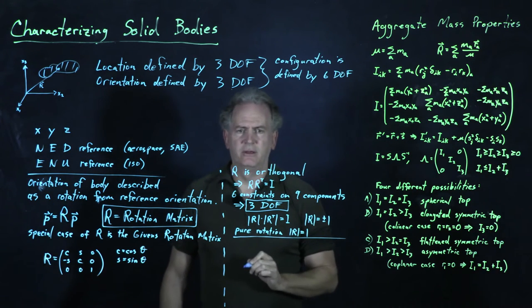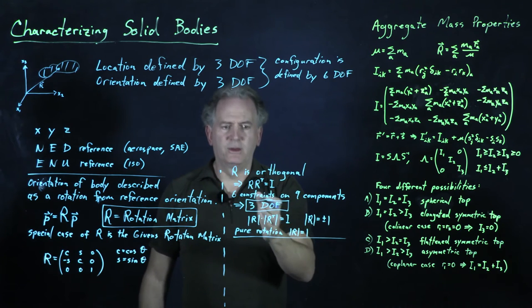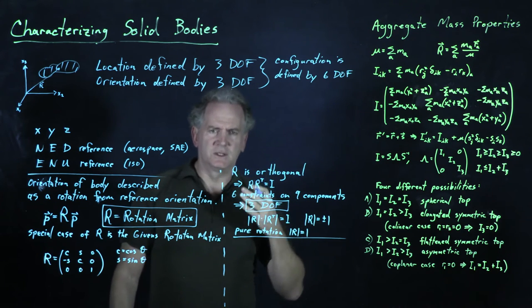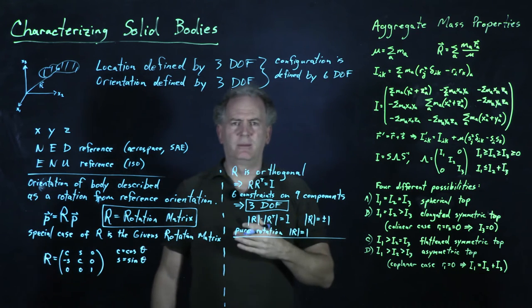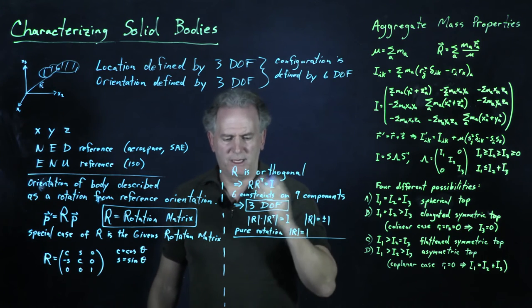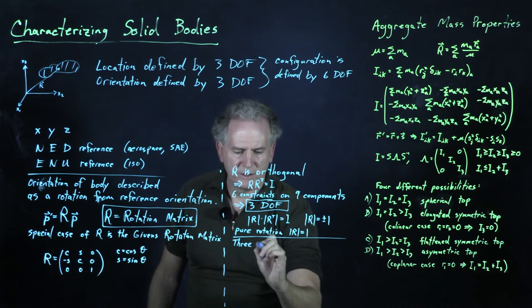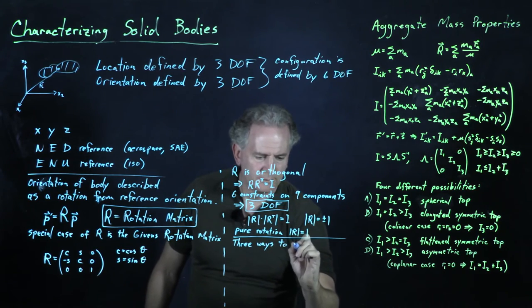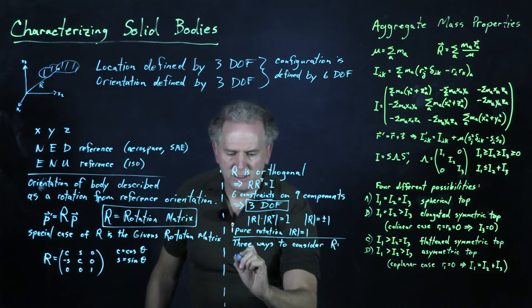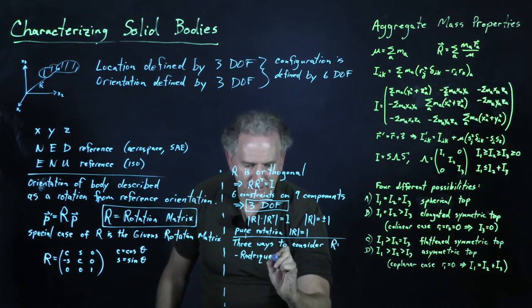That is the notion of the rotation matrix. The challenge is that it is difficult to visualize what is actually happening to the body with the three degrees of freedom left in R. So we can't work solely with R — we need other convenient ways to describe a rotation that we can convert to R. Three ways to consider rotation will be discussed in the following three videos.